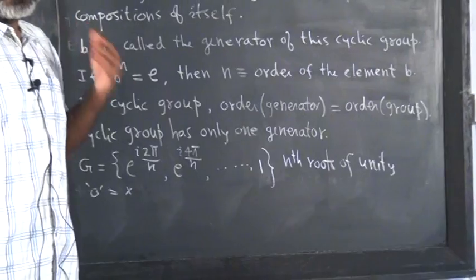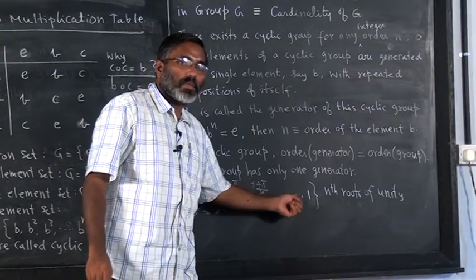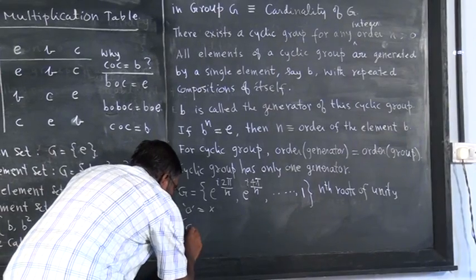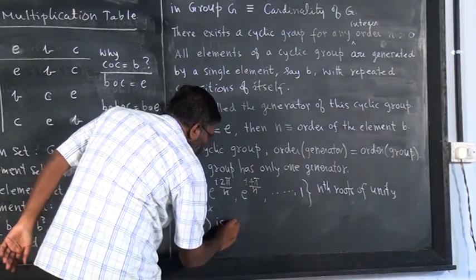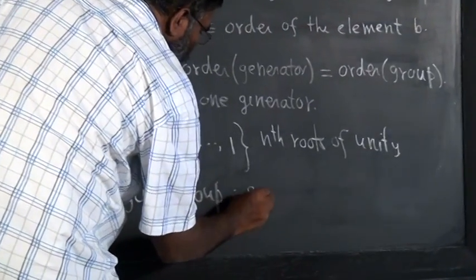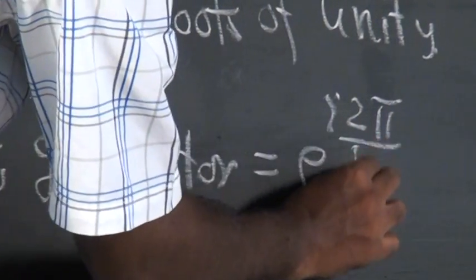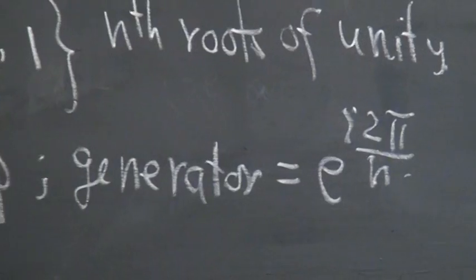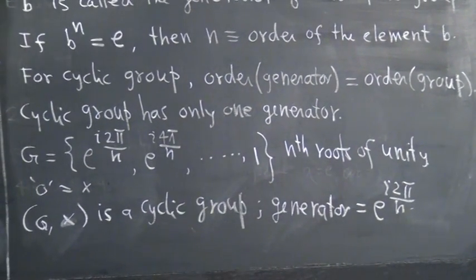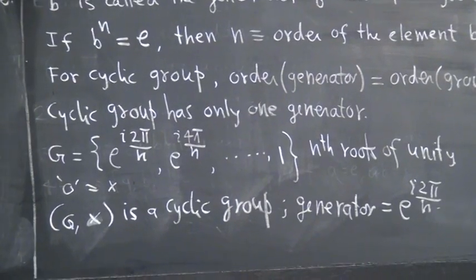This is a group and this is a cyclic group, because if you consider e^(i2π/n) as your B, then B square is e^(i4π/n), B cube is the next element, and B power n is equal to 1. So this is a cyclic group. The generator is e^(i2π/n). The order of the group is n, and the order of this element is also n, because this is a cyclic group.